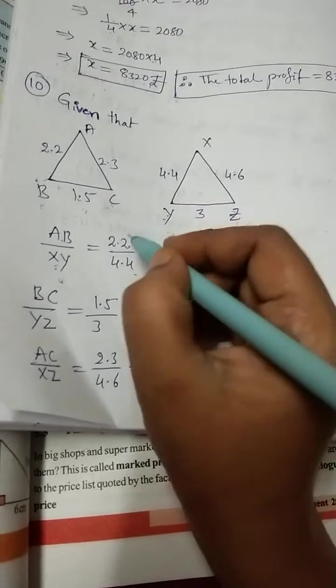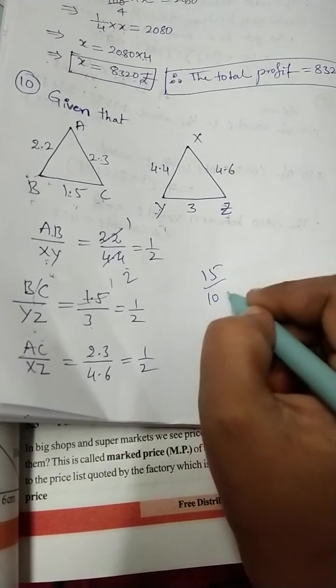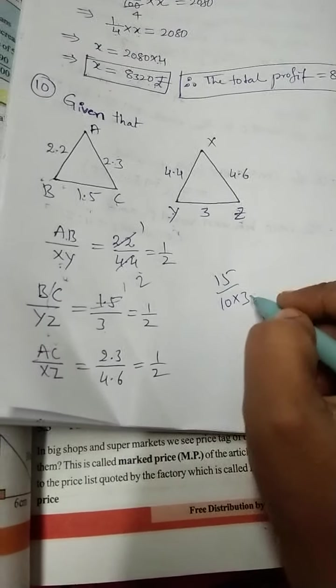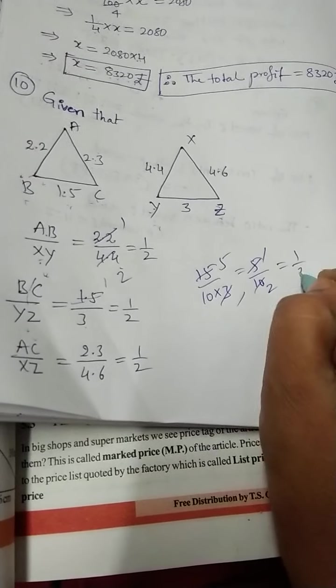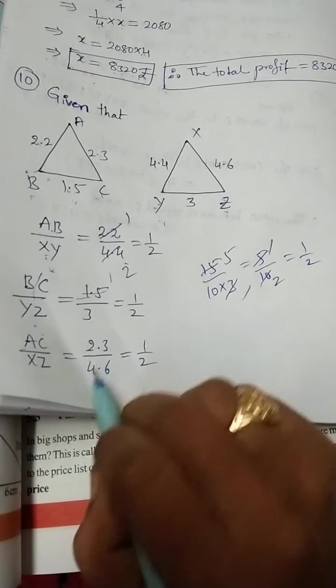Now BC by YZ, 1.5 by 3. 1.5 by 3, 1.5 means 1.5. Otherwise, you can take 15 by 10 into 10 by 30. 3 ones are 3, 5s are 15. 5 by 10 means 5 ones are 5, 2s are 10, 1 by 2 also we can get.